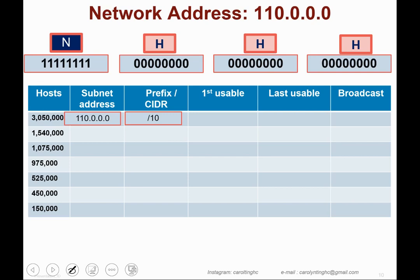With slash 10 we have 8 bits already, so we borrow 2 more bits, giving us 10 ones. The changes occur in the second byte, where 6 bits remain for host use. Two to the power of 6 equals 64, so you add 64 to the second byte. The next subnet address to cater for 3,050,000 hosts is 110.64.0.0.